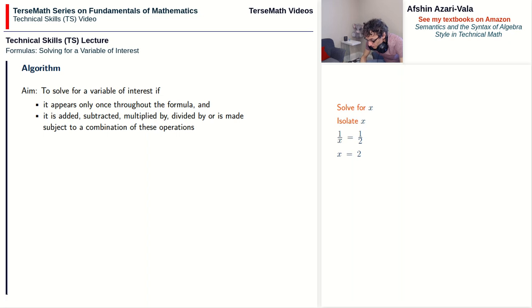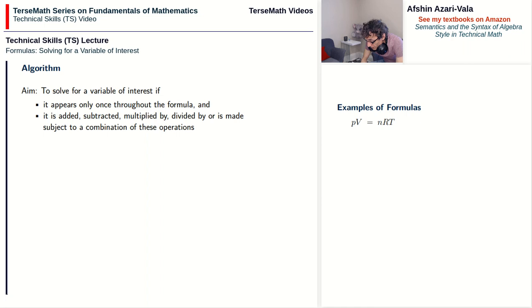Let's look at some formulas. In PV = nRT, P appears only once and is being multiplied by, so if solving for P the approach works. The same is true for V, n, R, and T — each appears once and is being multiplied by. So you can basically solve this formula for any of the variables, P, V, n, R, or T; both conditions are satisfied.